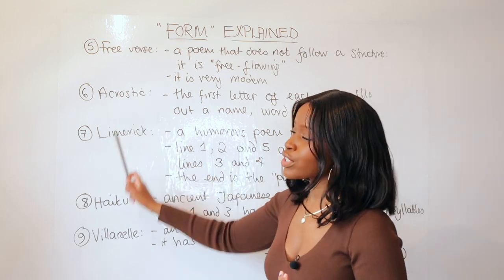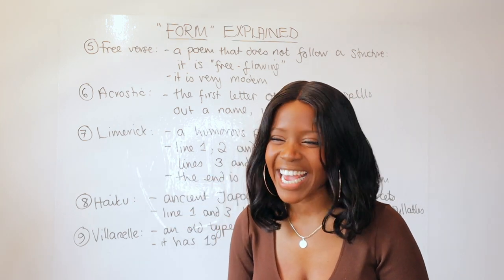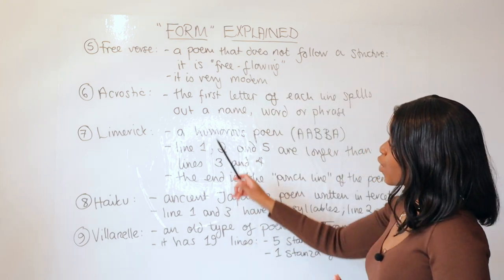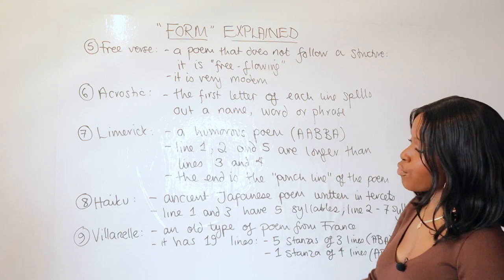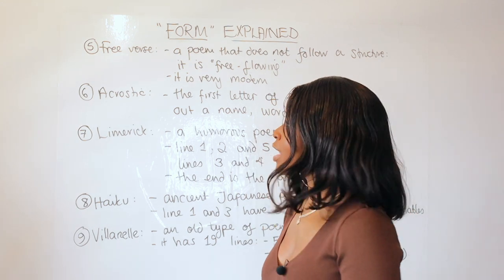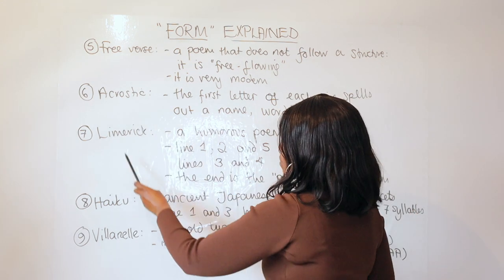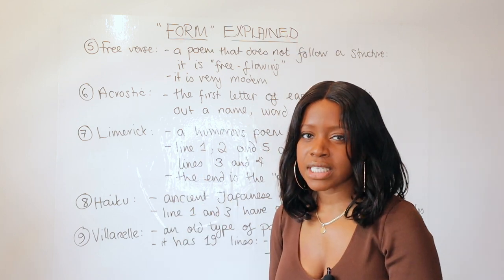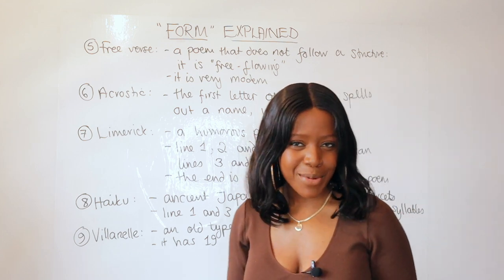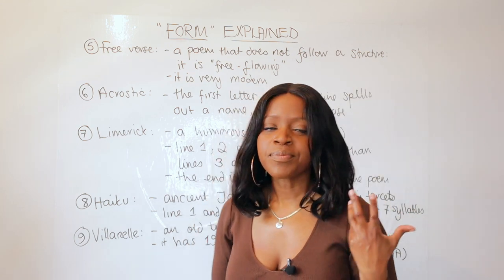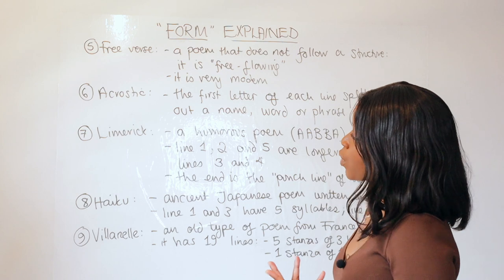The next poem to be aware of is the acrostic poem, and you've probably heard of it, especially in primary school. This is a poem where the first letter of each line spells out a name, word, or phrase. For example, let's say you've written HAPPY, H-A-P-P-Y—you write it on one side, and then for each letter you write out a verse of poetry. Very, very popular with school teachers.